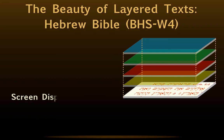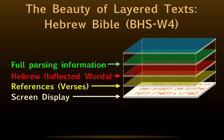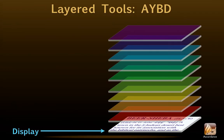The same key numbers also guide users to the proper articles in original language lexicons. Grammatically tagged original language texts, like this Hebrew Bible, have even more layers. The screen display actually conceals four separate layers: references, the Hebrew inflected words, full parsing information, and if we purchase the add-on module, syntactical analysis. All of these layers are fully searchable, and users can construct searches that use multiple layers. The tools in Accordance are the most complex modules we offer. Some of them have more than ten separate layers. In this example, the Anchor Yale Bible Dictionary, the tool has nine layers.